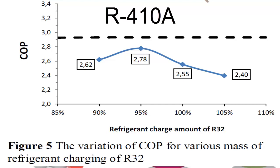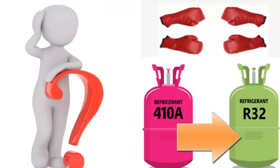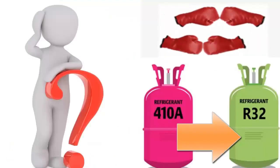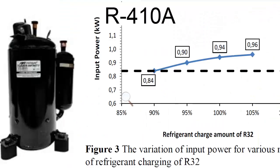11. Additionally, it's important to note that increasing electrical consumption by switching to R-32 may further elevate the compressor's temperature.